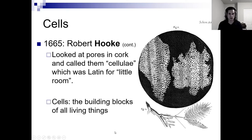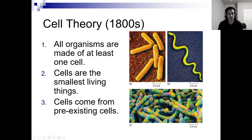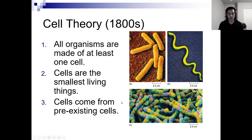Cells are the building blocks of all living things. The smallest unit of life is the cell. Cell theory has three tenets currently. The first one is all organisms are made of at least one cell. Cells are the smallest living things. And then the third one is cells come from pre-existing cells.